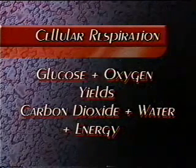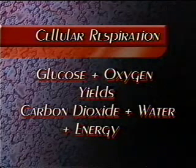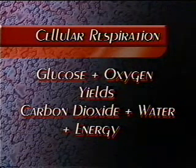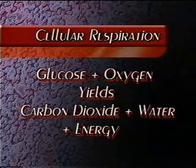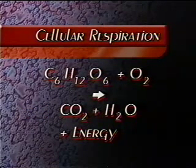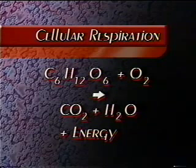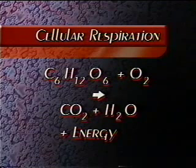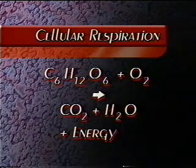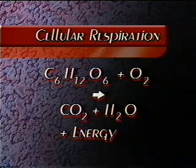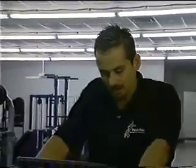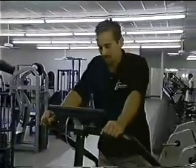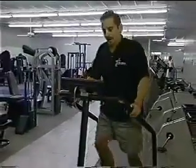The word equation for cellular respiration is: glucose plus oxygen yields carbon dioxide plus water plus energy. The chemical formula is C6H12O6 plus O2 yields CO2 plus H2O plus energy. Knowing this equation answers some of the most basic questions about us. Why do we breathe oxygen? Mitochondria need oxygen in order to release energy from glucose. It seems strange to say that we breathe for our mitochondria, but it's true.